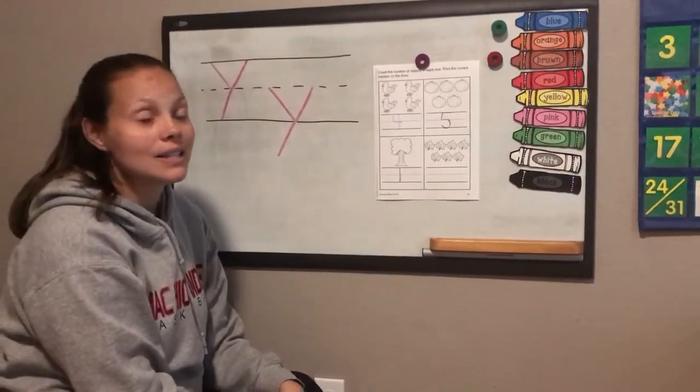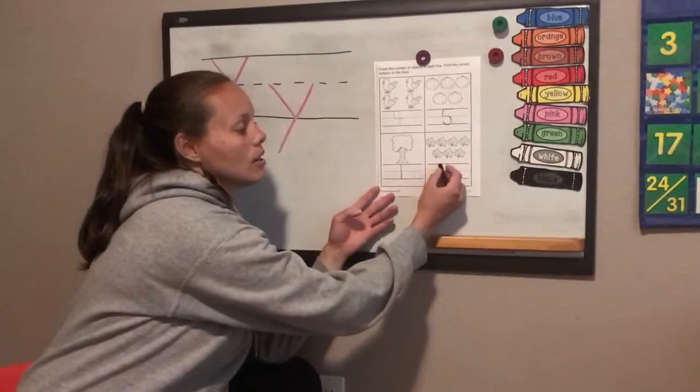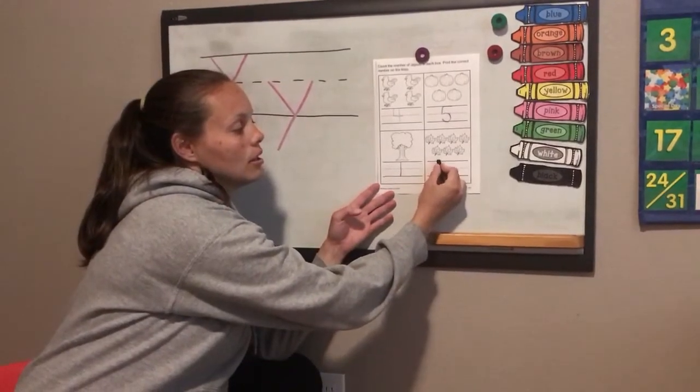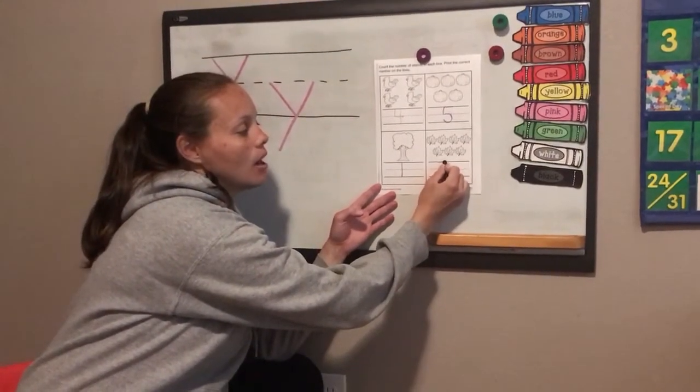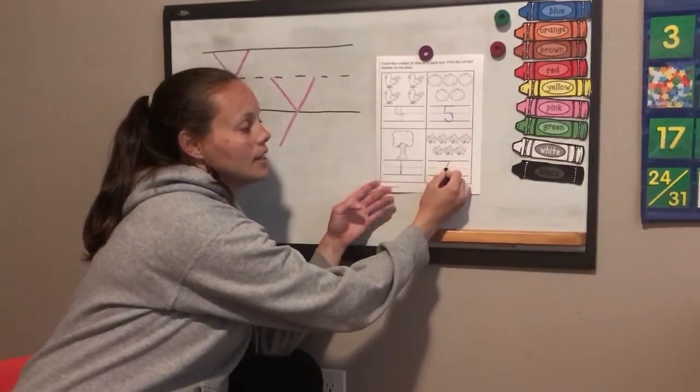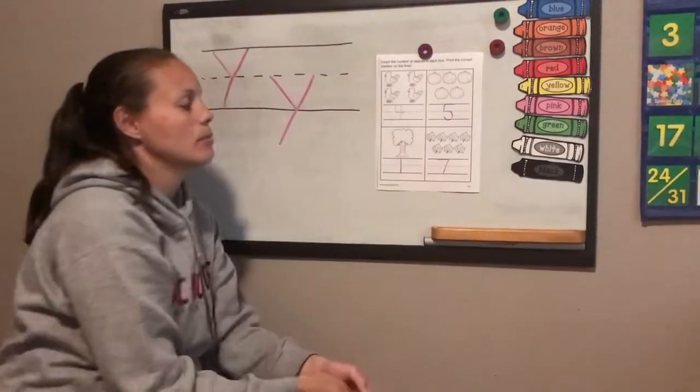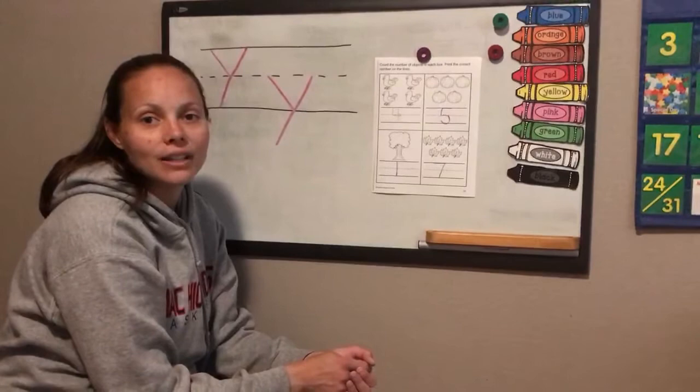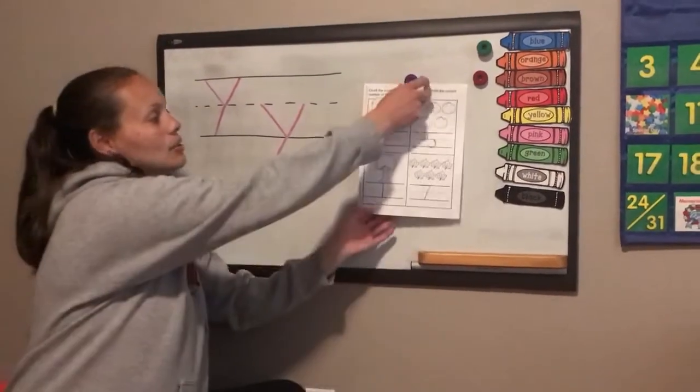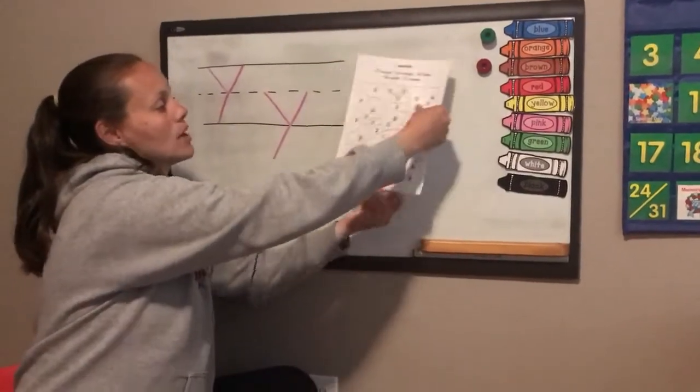All right, do we remember how to write a seven? We're going to start on our left and go across and then down all the way to the bottom. Let's go ahead and write your seven. When you finish writing your seven, let's go ahead and turn our paper over.